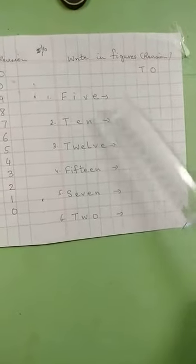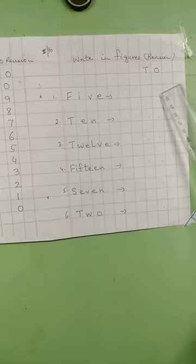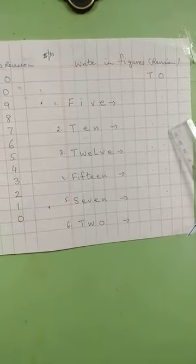Y'all will practice this. Now this is write in figures. Revision. Five, you will write the number below 0, 5. Ten, you will write the number below T and O, 10.